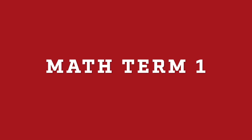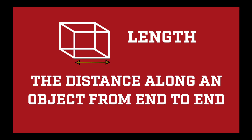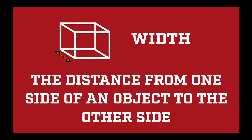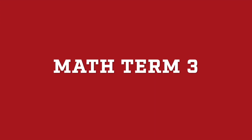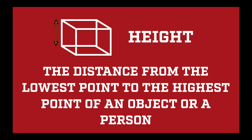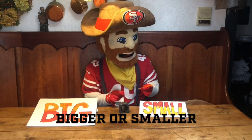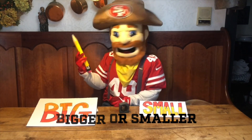I'll explain some of the terms I mentioned in case you're not familiar with them. Length is the distance along an object from end to end. Width is the distance from one side of an object to the other side. Height is the distance from the lowest point to the highest point of an object or a person. Here's an extra point for all you stellar students: in math we can also describe items as being bigger or smaller, or greater than or less than.